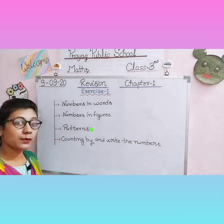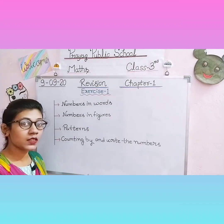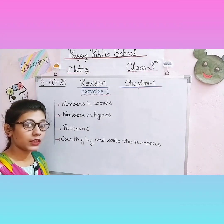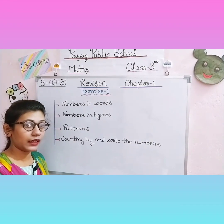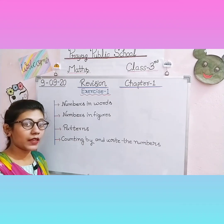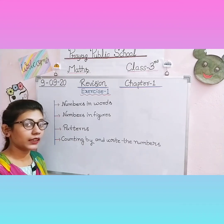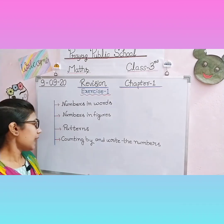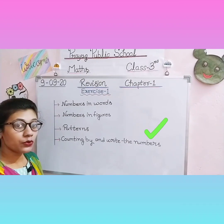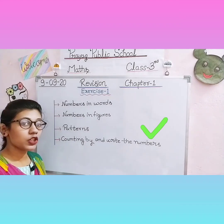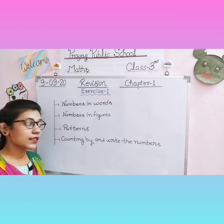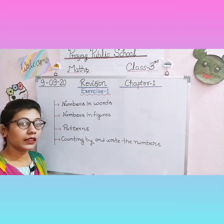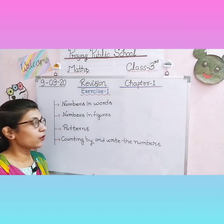The third topic is patterns. In this, we complete a series. If it is based on skip counting, we fill in the numbers by skip counting. If it is based on tables, we fill accordingly — we complete the given pattern. The fourth topic is counting by twos, threes, or however much is given in the question — how do we write the numbers between two given numbers using that counting?